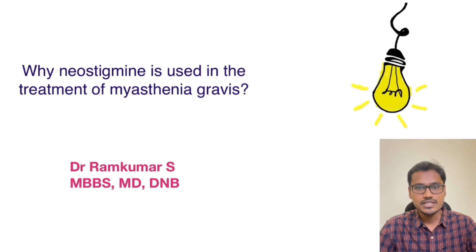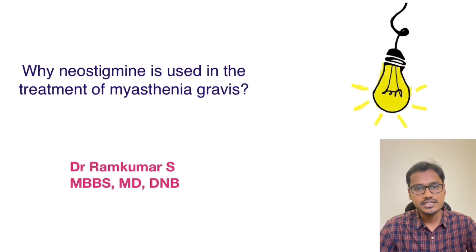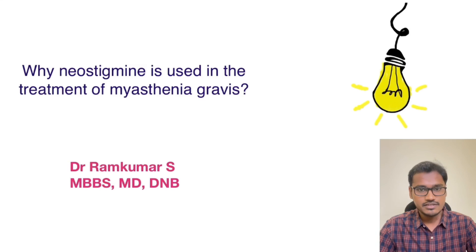Myasthenia gravis is a neuromuscular disorder wherein antibodies are produced against the acetylcholine receptors. In these patients, neostigmine is used as a treatment. Let us see what is the reason.